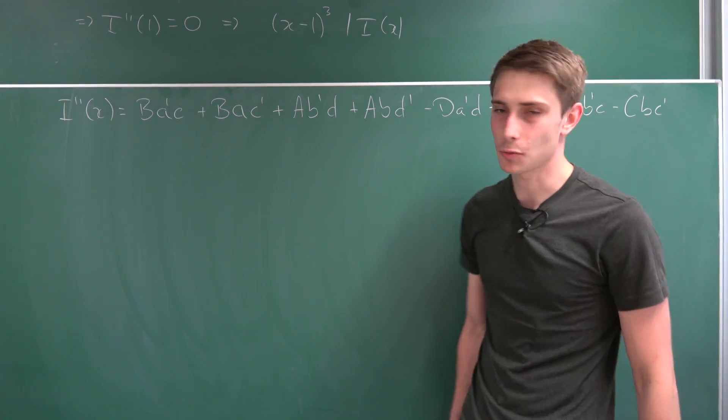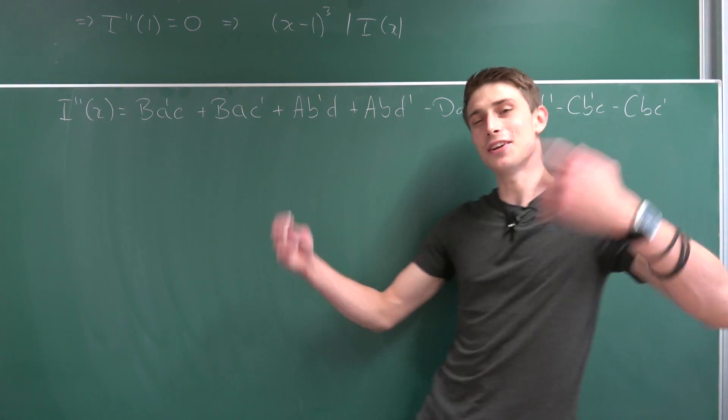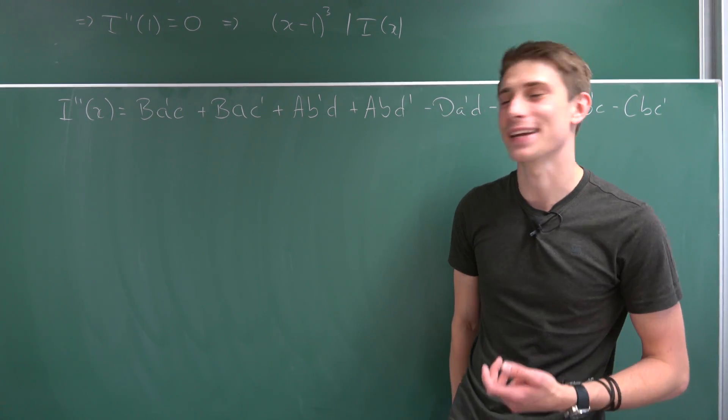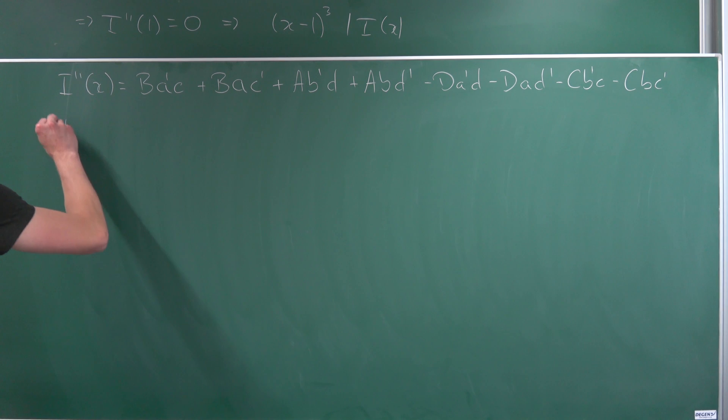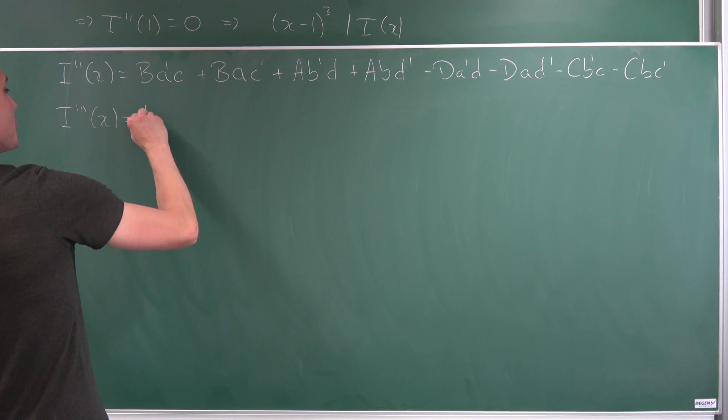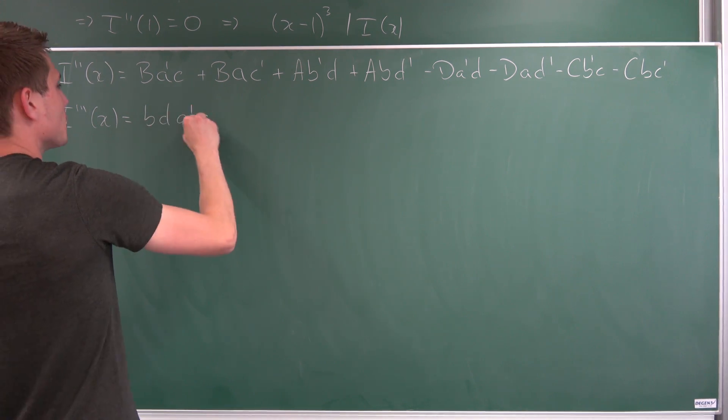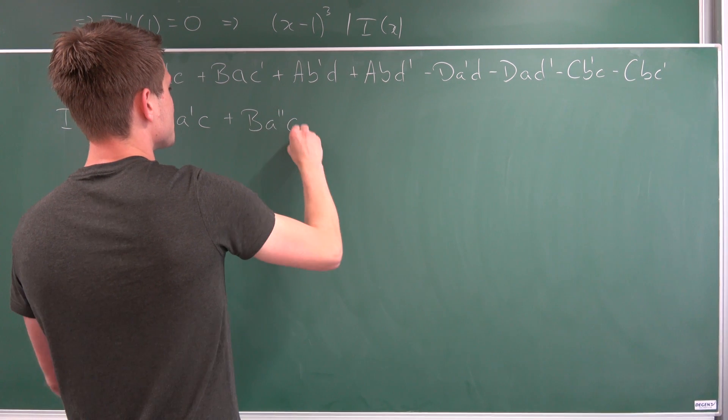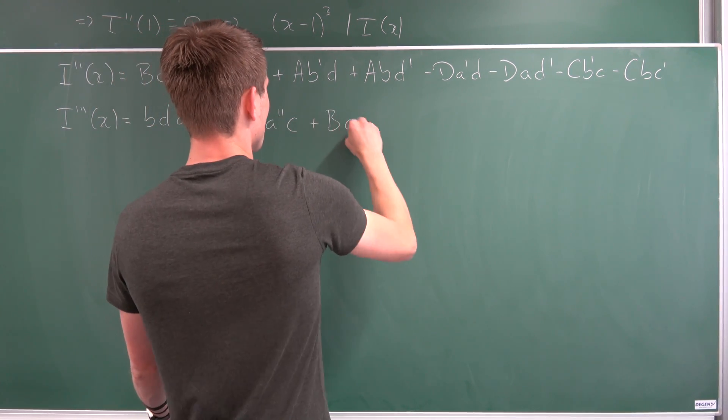So this right here is definitely going to be an outtake because well this just takes ages, but if you enjoy me doing stuff like this then let's go ahead and get started. So I triple prime of x is going to evaluate, so B is nothing but B times D A prime times C, next one plus B A double prime C plus B A prime C prime.